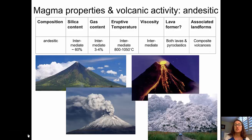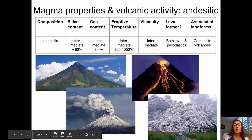Moving on to andesitic or intermediate compositions: the silica content is a little higher at about 60%, and the gas content is also higher at 3% to 4%, high enough that we see very explosive eruptions frequently. Temperature has decreased down to about 800 to 1,050 degrees C. These intermediate or andesitic lavas tend to form both lavas and pyroclastic materials — including pyroclastic flows like those from Mount Pinatubo's eruption — and are typically associated with composite volcanoes or composite cones.